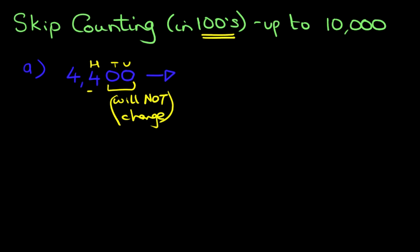As for the hundreds, well, that will go up by one. The thousands, it really depends on what happens to the hundreds. We'll come on to that in a moment. So therefore, this number now becomes 4,500. So 4,400, 100 after that is 4,500.